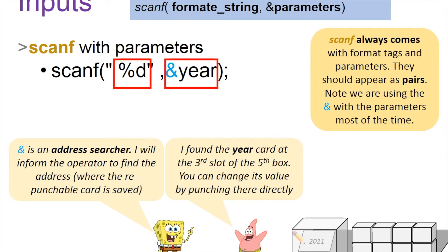For example, when you're using this address searcher, the operator will find the address located in the third slot of the fifth box for the year variable. So anytime you want to use it, you can use that address directly instead of using the name.